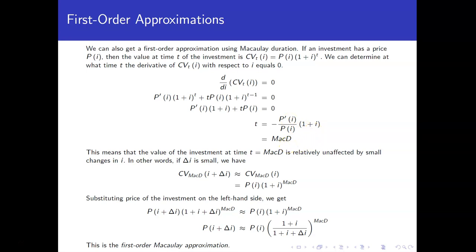So what that means is that the value of an investment at that time is not affected much by small changes in i. Because again, we have a horizontal tangent line at that point, if you think about it graphically. All right, so in particular, the current value at the Macaulay duration time, if I change the i slightly, should be about the same as the current value at that particular value of i, or just substituting what we said the current value was, that's the price times 1 plus i to the Macaulay duration time.